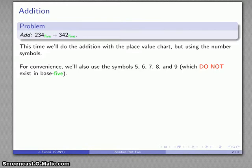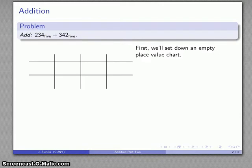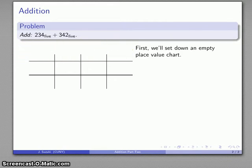First, I'll set down an empty place value chart. I'll put down four columns and set down the names of the units. My rightmost column is ones. My next column over—base 5 means that I can take five of these and that's my next unit—five ones, I would call five.